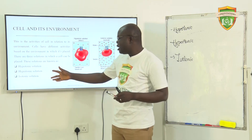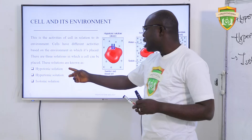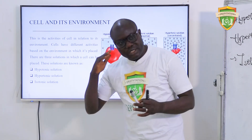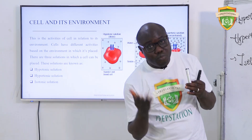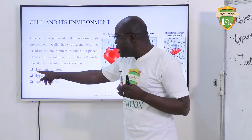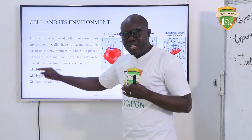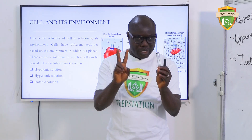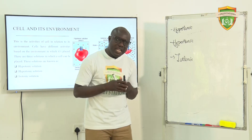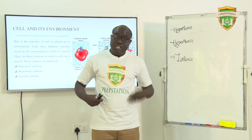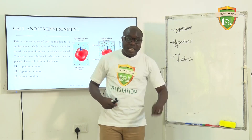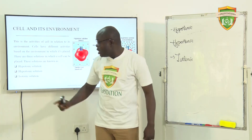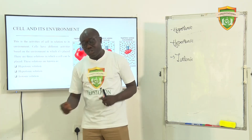Let me quickly explain the meaning of these different solutions. When a cell is placed in a hypotonic solution — 'hypo' means below, not enough, not up to the level it's supposed to be — the concentration of the cell and that of the environment are not the same. The concentration inside the cell is more than that of the environment. The environment does not have enough concentration compared to the cell.